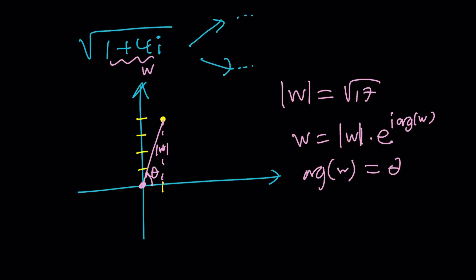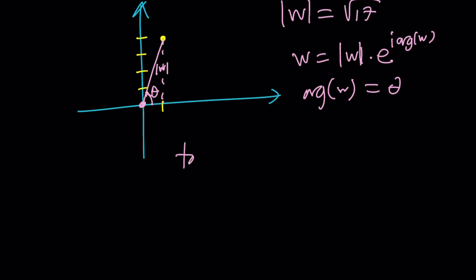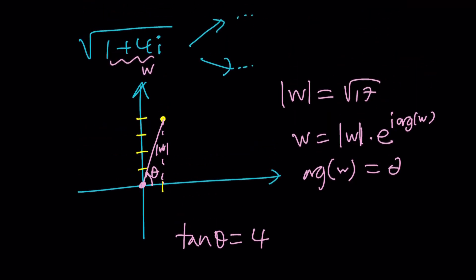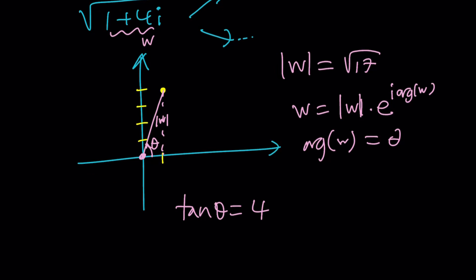Argument of w in this case is theta, right? So we kind of need to find theta. What do we know about theta, though? We know its tangent, right? So tangent theta is 4 over 1 or just 4. Well, guess what? When you take the square root of a complex number, what are you doing? You're cutting the argument in half and you're square rooting the modulus.